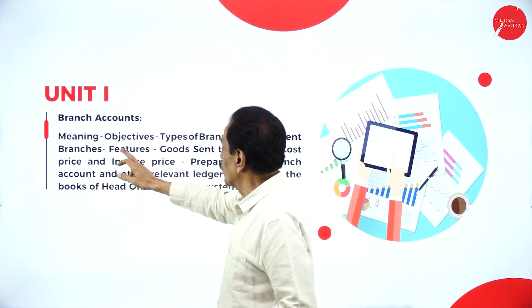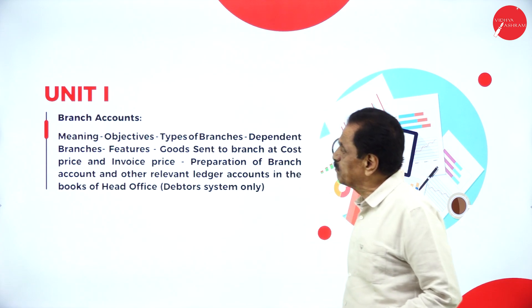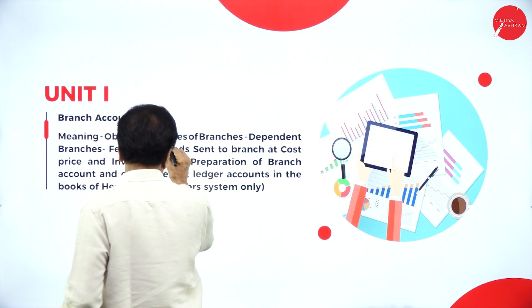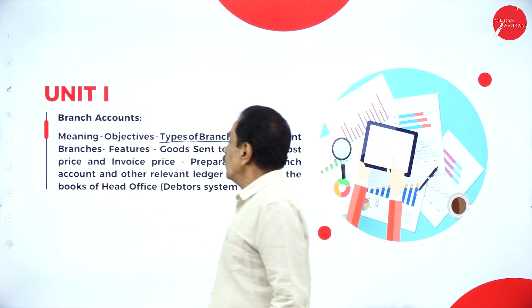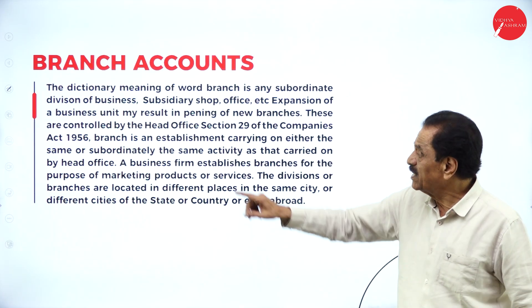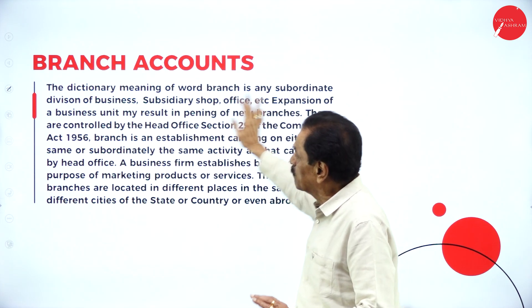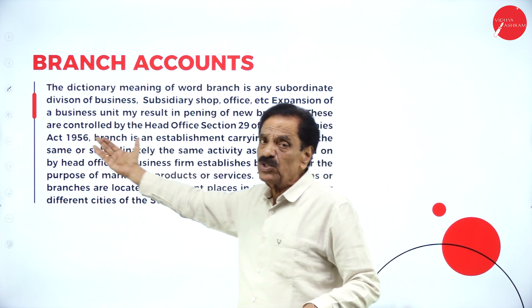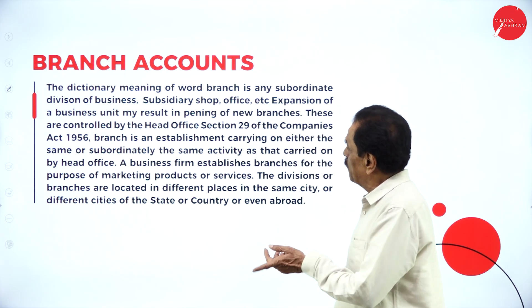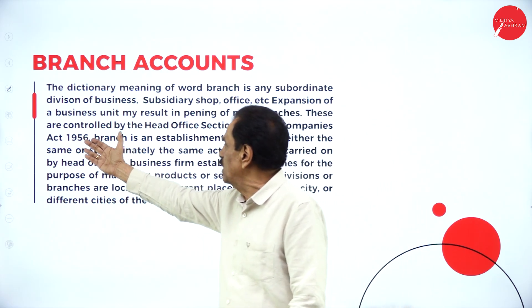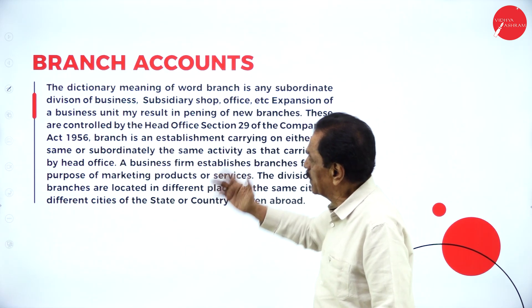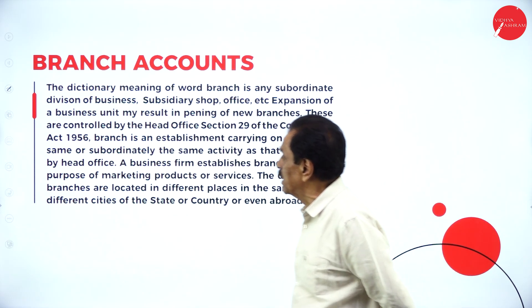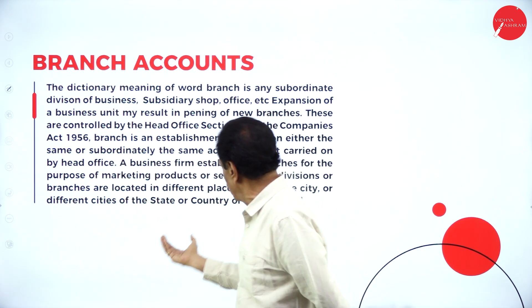So in branch account, Unit 1, you are going to decide types of branches, departmental branches, and all these things. The dictionary meaning of the word 'branch' is any subordinate division of business, subsidiary shop, office, etc. Expansion of a business unit may result in opening of new branches. These are all controlled by the head office — Section 29 of the Companies Act 1956. A branch is established carrying either the same or subordinate activities as that of the parent company.